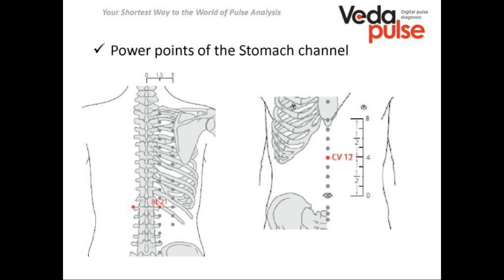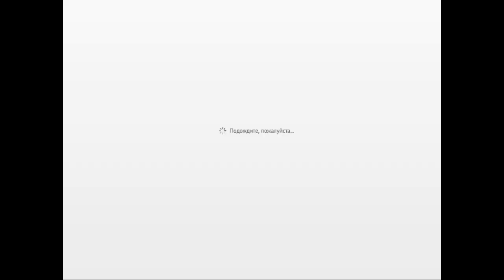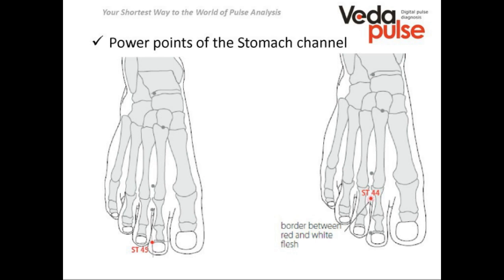Now we are going to talk about the points of five elements and start with the final point, then go up along the lower limb. We will discuss point number 45, E45 or ST45. There are two different nomenclatures in the VedaPulse acupuncture module — you can use either one.